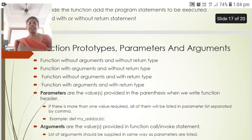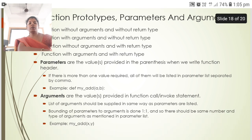The next is function prototypes, parameters and arguments. Function without arguments and without return type. Function with arguments and without return type. Function without arguments and with return type. Function with arguments and with return type. These are the function prototypes. Parameters are the values provided inside the parenthesis when we write function header. Arguments are the values provided in the function call or invoke statement.